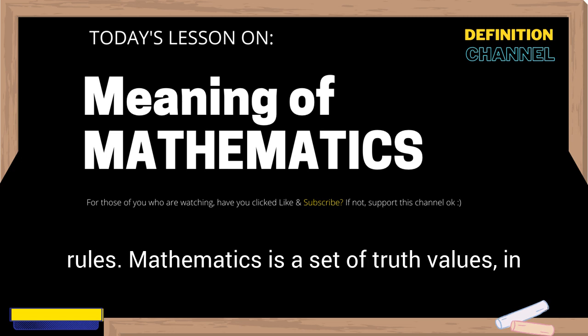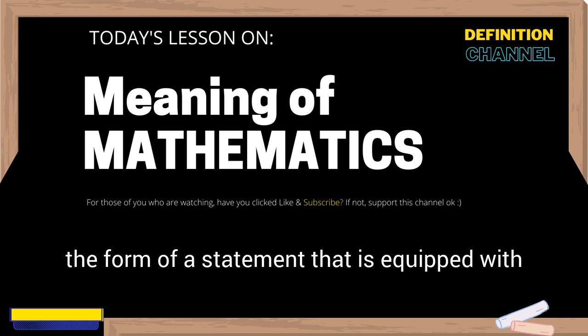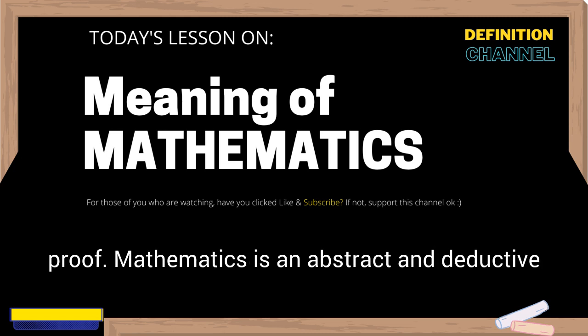Mathematics is the knowledge of strict rules. Mathematics is a set of truth values in the form of a statement that is equipped with proof. Mathematics is an abstract and deductive science.